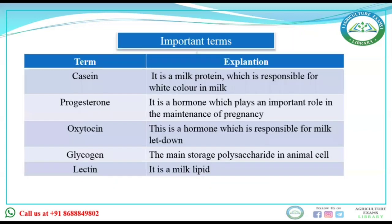First is casein. Casein is a milk protein which is responsible for the white color in milk — milk appears white because of the presence of casein protein. Next is progesterone, which is a hormone that plays an important role in maintaining pregnancy.